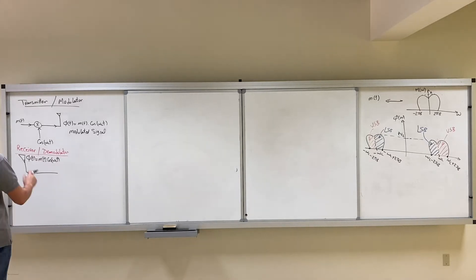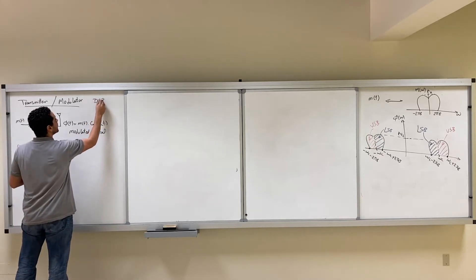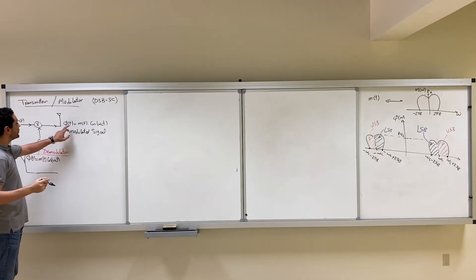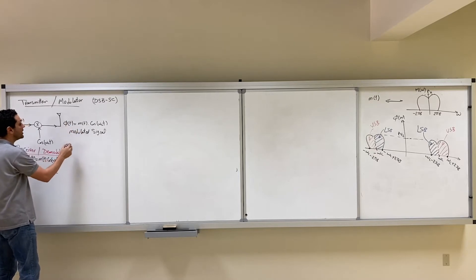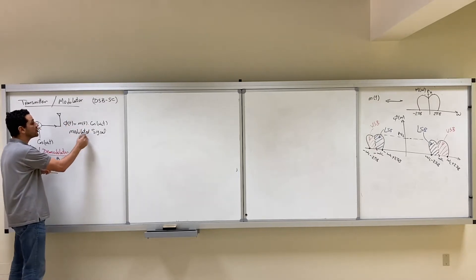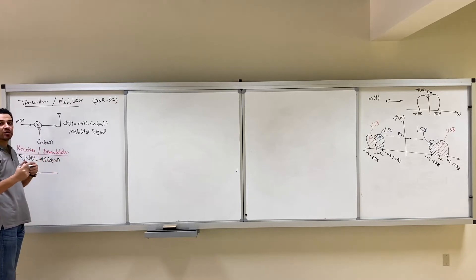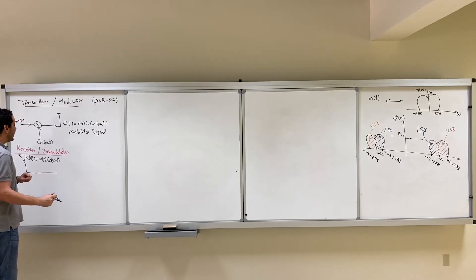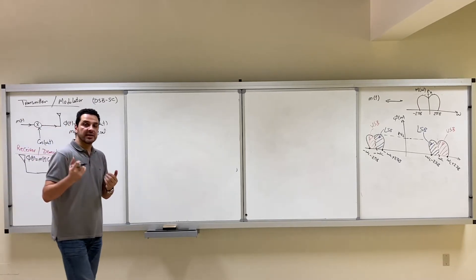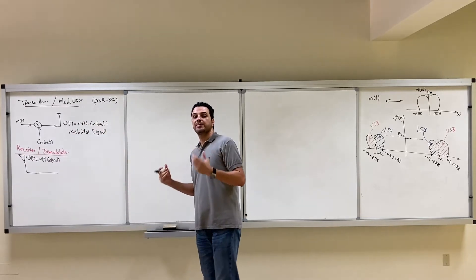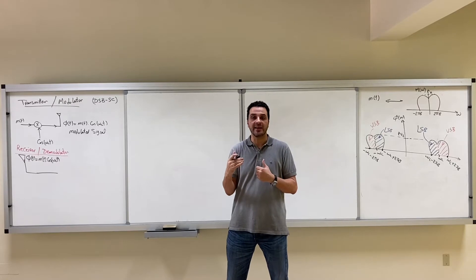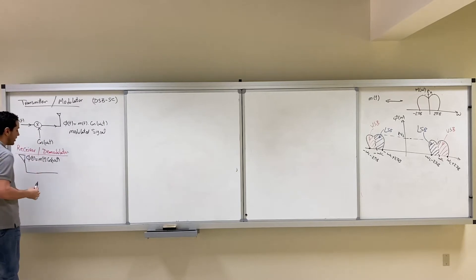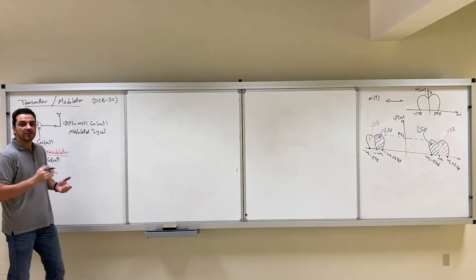In the previous video we saw the modulator or the transmitter of the double sideband suppressed carrier technique, where we multiply M(t) times the carrier and get φ(t) = M(t)cos(ωct). M(t) is called the modulating signal and φ(t) is called the modulated signal. Now let's discuss the receiver or the demodulator — its purpose is to retrieve M(t) from the received signal φ(t).